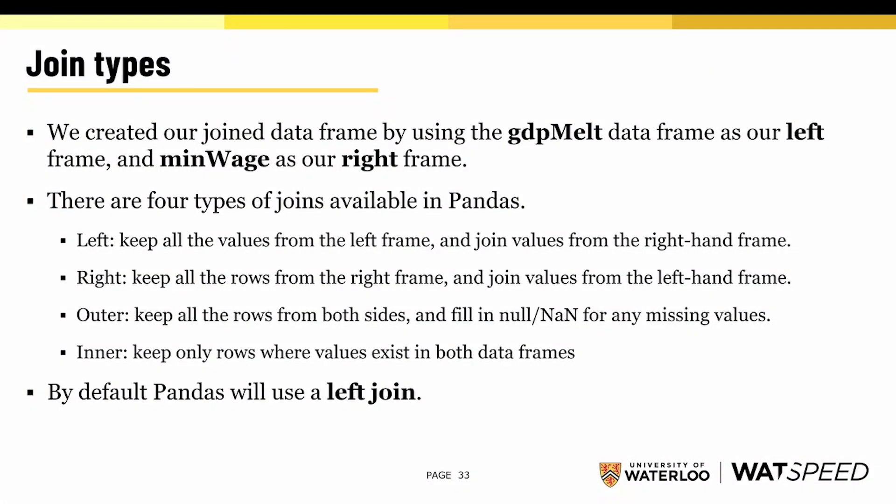Let's talk about the different types of joins. We created our joined dataframe using GDP Melt as our left-hand dataframe and Minimum Wage as our right-hand dataframe. In Pandas we have five types of joins available to us. The first is the left join, where we keep all of the values from our left-hand dataframe and join values from the right-hand frame. Every value that appears in our left-hand dataframe will appear in our joined dataframe, but not necessarily every value from our right-hand dataframe.